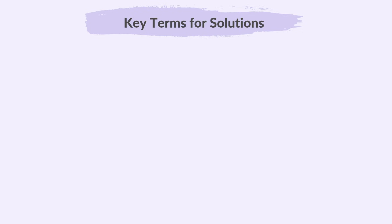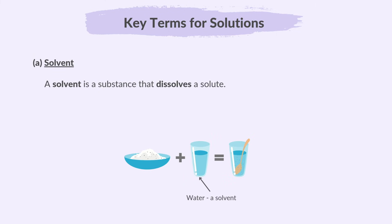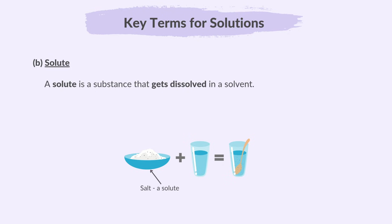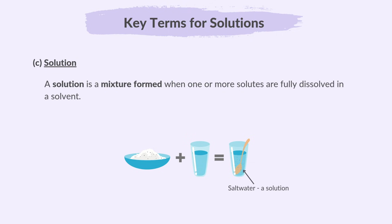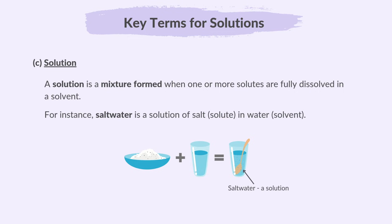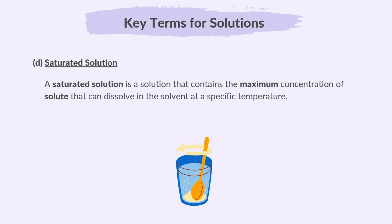These terms are fundamental to understanding separation techniques and solutions in chemistry. A solvent is a substance that dissolves a solute — for example, water is a common solvent that dissolves salt or sugar. A solute is a substance that gets dissolved in a solvent — for example, salt is the solute when dissolved in water. A solution is a mixture formed when one or more solutes are fully dissolved in a solvent — for instance, salt water is a solution of salt in water. A saturated solution is a solution that contains the maximum concentration of solute that can dissolve in the solvent at a specific temperature.